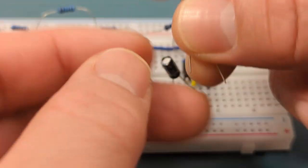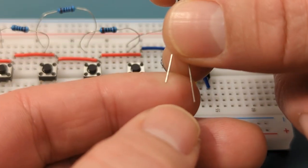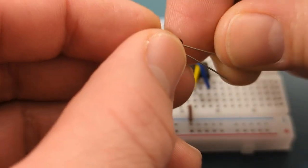Insert a 0.1 microfarad capacitor into pin 2, or trigger, in the negative rail. Insert the shorter leg into the negative rail.